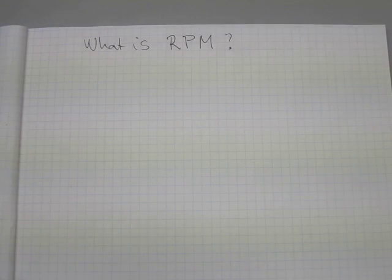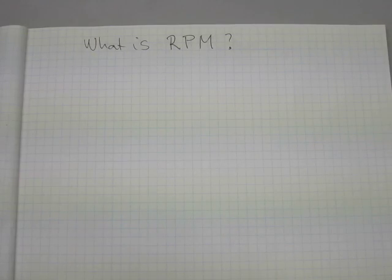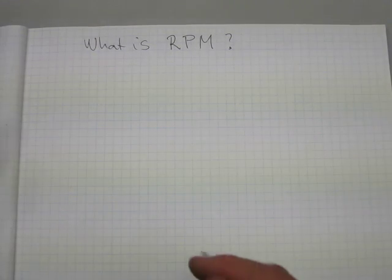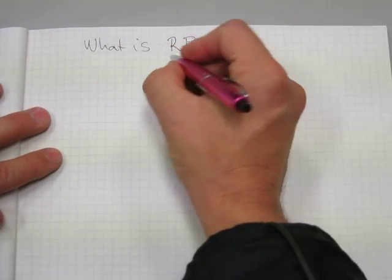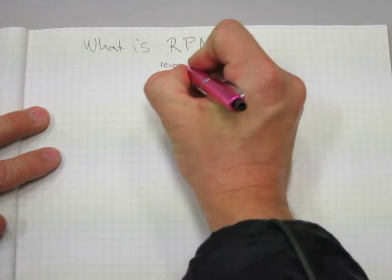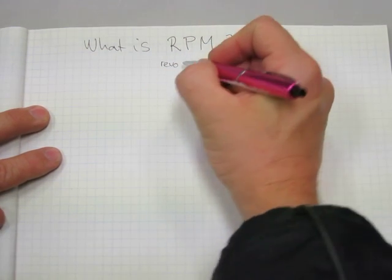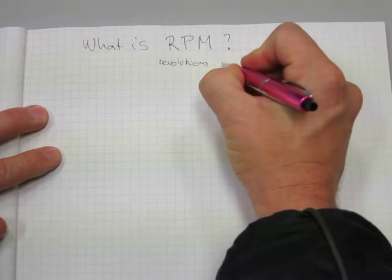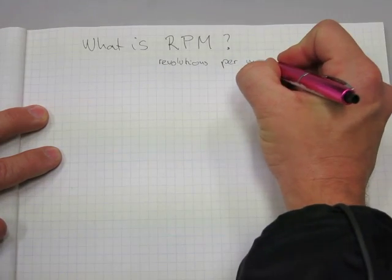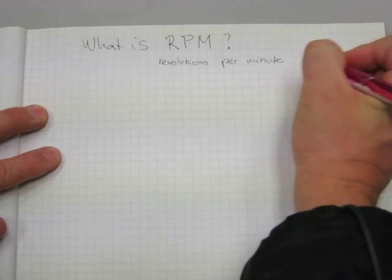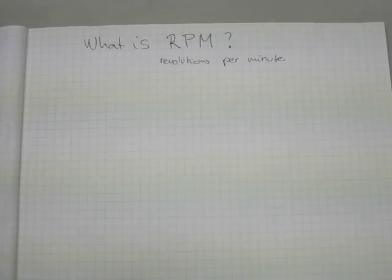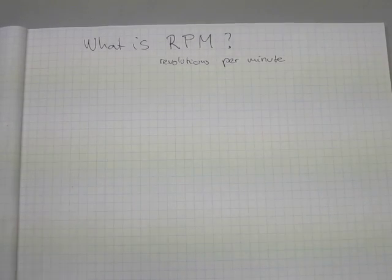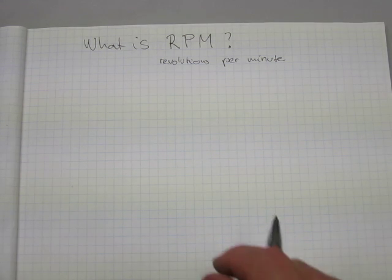In this video I want to discuss what an RPM is. If you look it up in the dictionary — or maybe it's already in your memory bank — RPM stands for revolutions per minute. So that's what an RPM is.